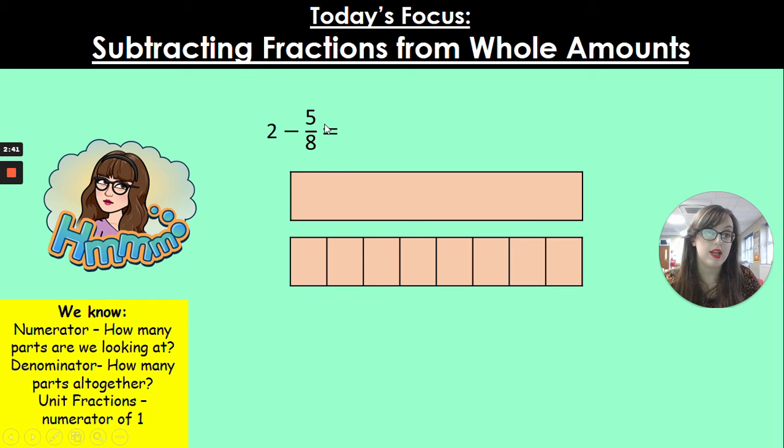I want to take away 5 eighths and I can cross them off here. So 1, 2, 3, 4, 5. I've subtracted 5 eighths from my 2 holes. Now I've got 1 hole and 1, 2, 3 eighths left over. There's our answer.